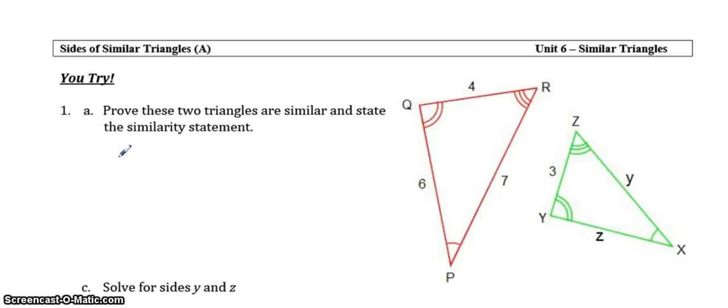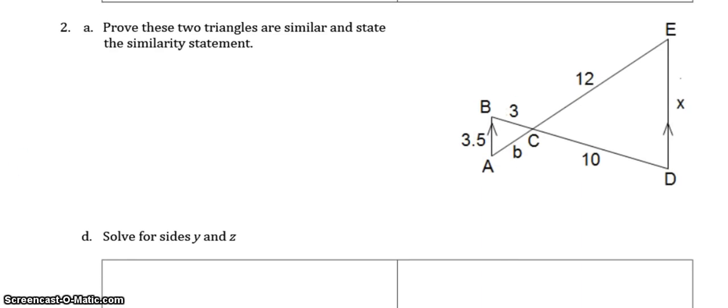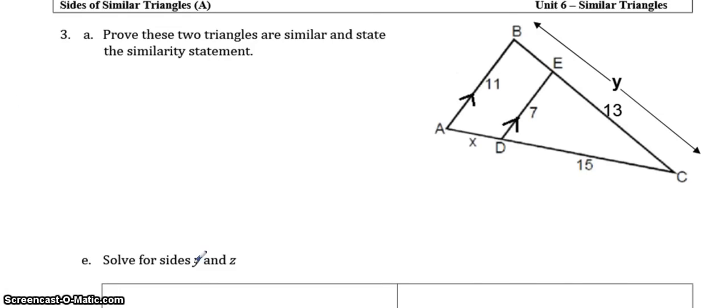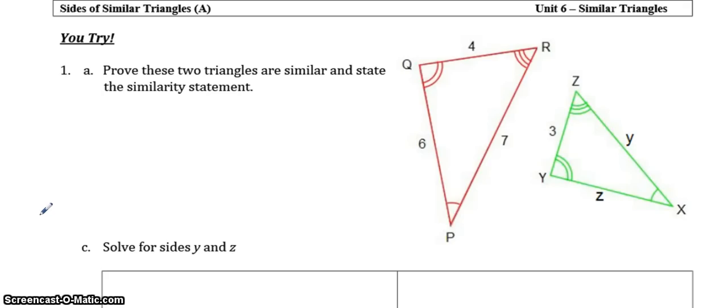So, what you're going to do now is try examples 1, 2, 3, and 4 on your own. Before you do, there's a couple of corrections to make, and I apologize for this. In example 2, instead of solving for Y and Z, you're going to be solving for B and X. And in example 3, instead of solving for Y and Z, you're going to be solving for Y and X. Alright, so press pause, try examples 1, 2, 3, and 4. And then come back to the video to check your answers after. Thank you.